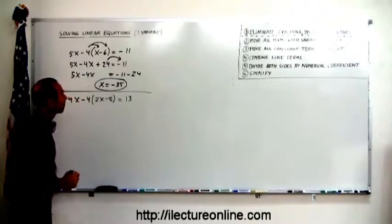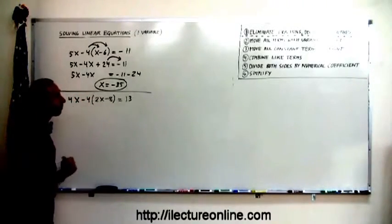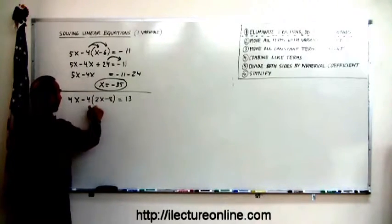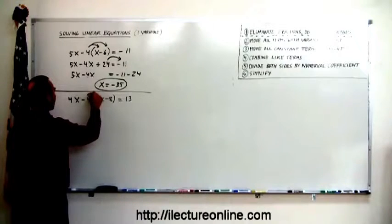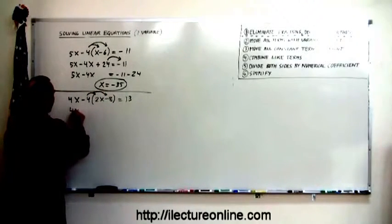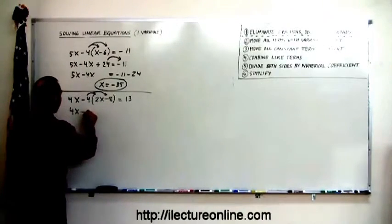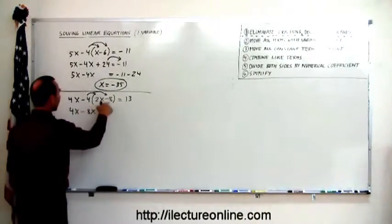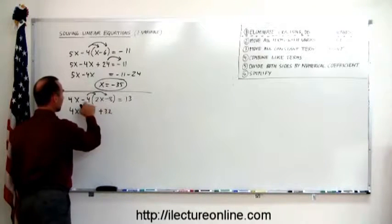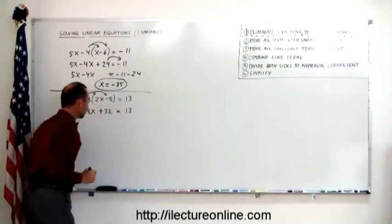4x minus 4 times 2x minus 8 equals 13. We have parentheses. Step number one is necessary. Let's get rid of these parentheses by distributing the negative 4 over these two. So we have 4x minus 4 times positive 2x is minus 8x. Minus 4 times minus 8 is positive 32. When you multiply negative times a negative, you get a positive. And that equals 13.